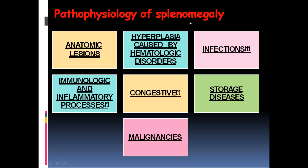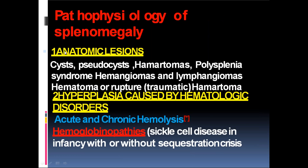Pathophysiology of splenomegaly: anatomic lesions, hyperplasia caused by hematologic disorders, infections, immunologic and inflammatory processes, congestive causes, storage diseases, and malignancies. Anatomic lesions include cysts, pseudocysts, hematomas, polysplenia syndrome, hemangiomas, lymphangiomas, and hematoma or rupture.